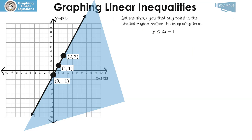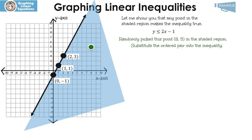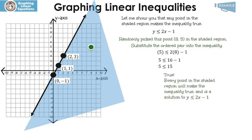Now let me show you that any point in this shaded region makes the inequality true. I randomly picked the point 8, 5 — which is in the shaded region. The inequality will be true when I put 8 in for x and 5 in for y. Substituting: 2 times 8 is 16, so I have 5 is less than or equal to 16 minus 1, which is 15. And yes, 5 is less than or equal to 15. That means every point in the shaded region makes the inequality true, and this is the solution to y is less than or equal to 2x minus 1.